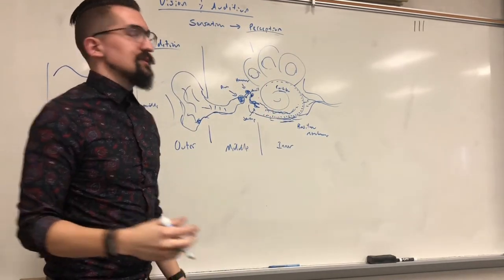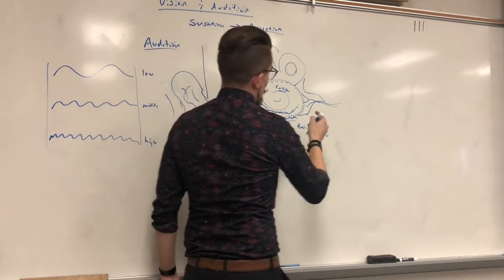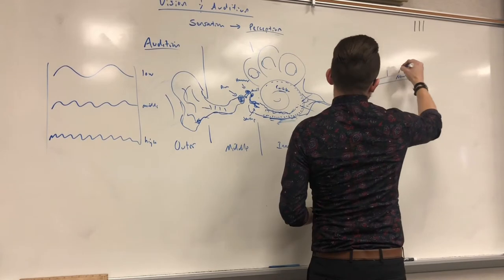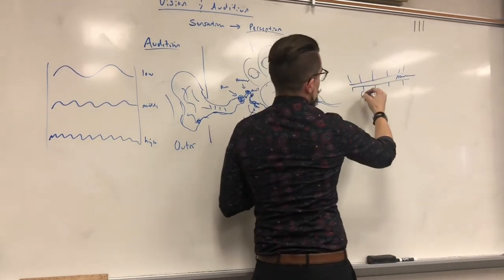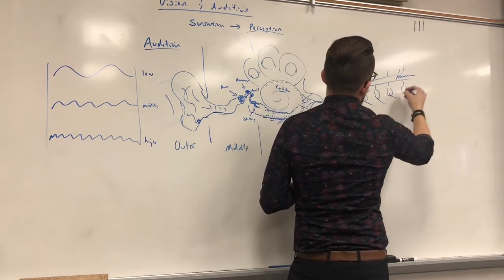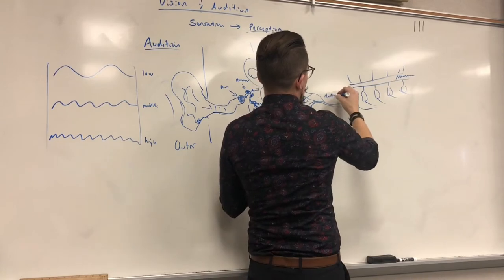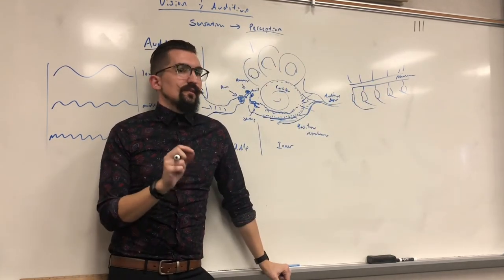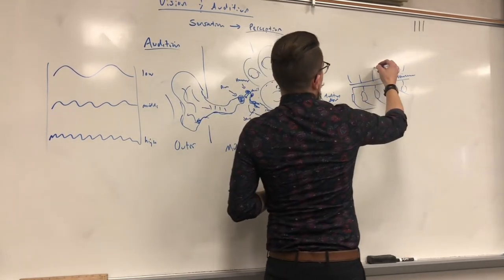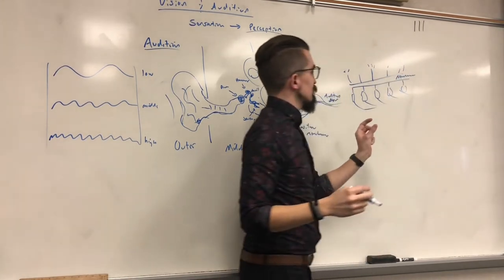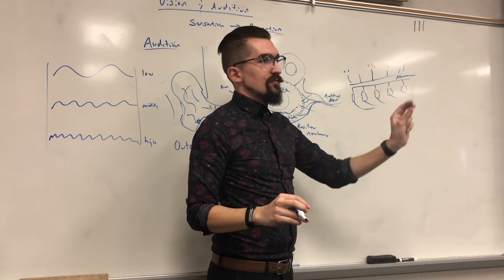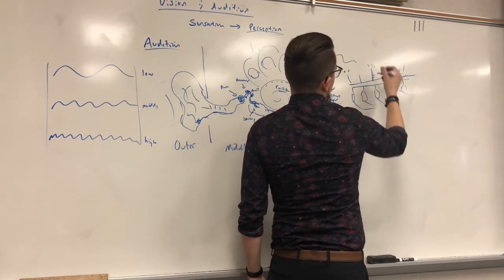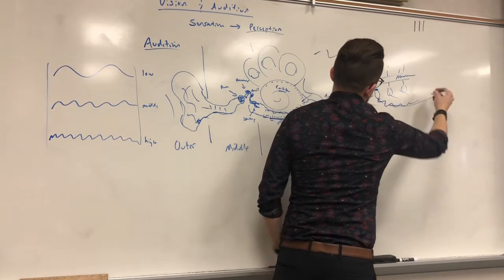The hairs are located on the basilar membrane. Zooming in on the cochlea: here's the membrane, here are the hairs sticking through, and on the other side they are attached to neurons, which attach to the auditory nerve — the sound nerve — which goes to your thalamus and then to your brain, just like vision does. Depending on the vibration, it activates a certain hair based on the thickness or length of that hair, which only responds to certain wavelengths.